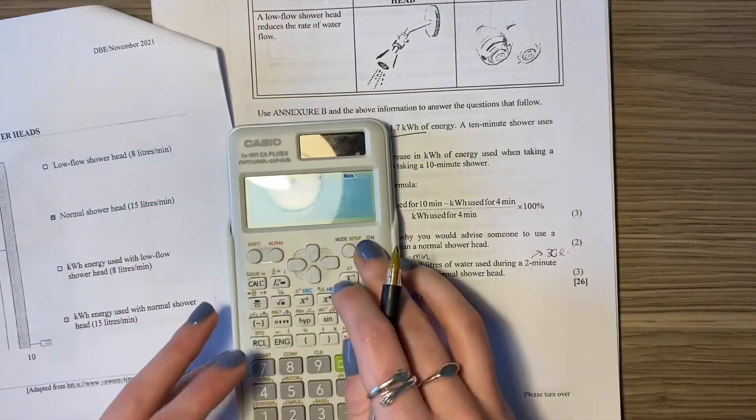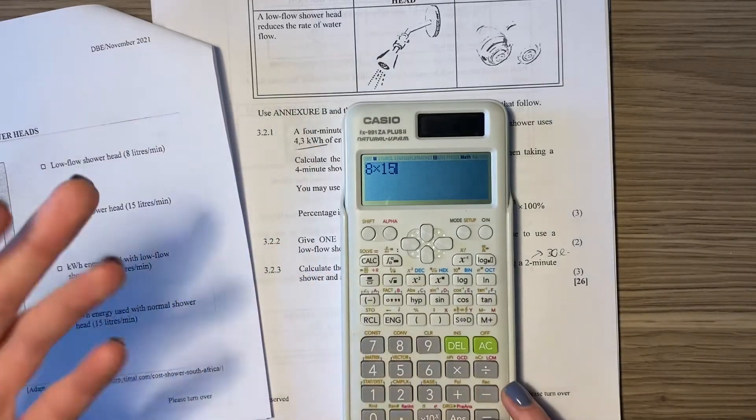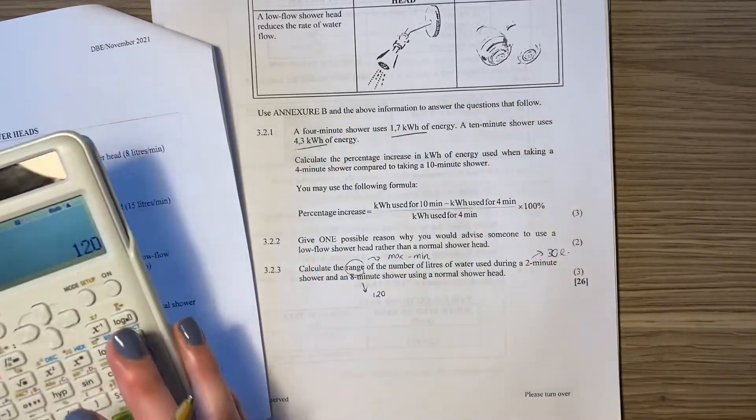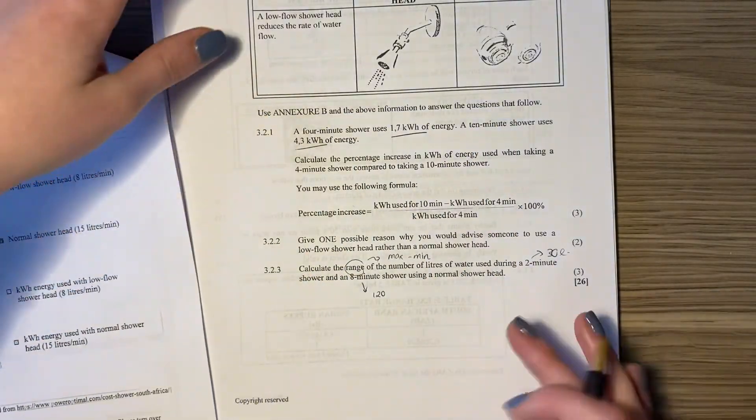We can also do a little check on our calculator and say, well, what is eight times 15, considering that every minute there's 15 liters that go through. It's 120, so it's a good check. You could do it either by looking at the graph, or by kind of using your common sense.